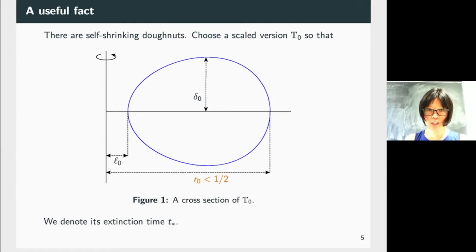So we choose a scaled version of those self-shrinking doughnuts so that they are in a ball of radius strictly less than one-half. And the height I denoted by delta-naught is going to be very small, and in fact you can take delta-naught, L-naught and R-naught, tiny, really, really small. The important fact is that R-naught is less than one-half. You will see in the next picture why. So that's a cross-section of T-naught and we will denote this extension time T-star.